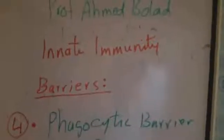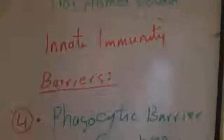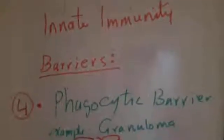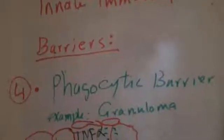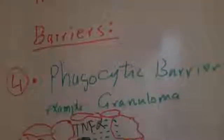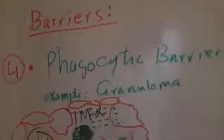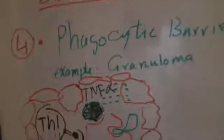Now I am going to talk about the phagocytic barrier of the innate immune system. An example of that barrier is granuloma formation. As you know, if someone gets infected by a bacteria, this bacteria will be engulfed by the macrophage, and inside the macrophage this bacteria will be processed into peptides.